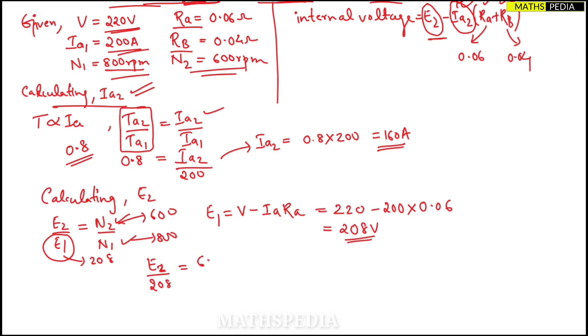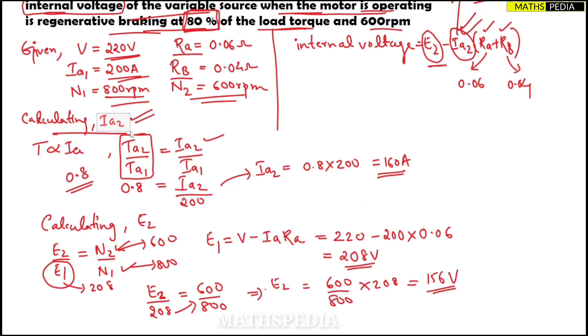So E2/208 = 600/800. From this E2 = (600/800) × 208. Calculating this I'll get the value as 156 volts.